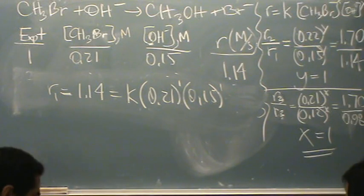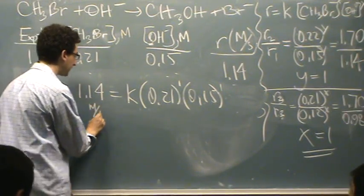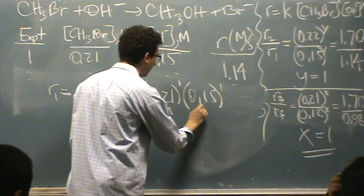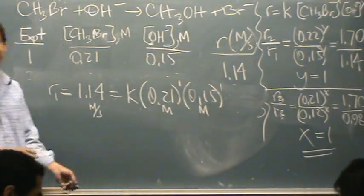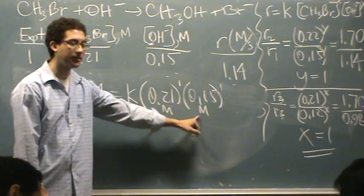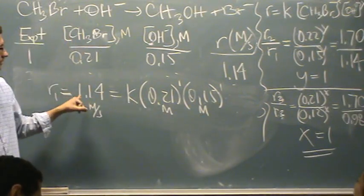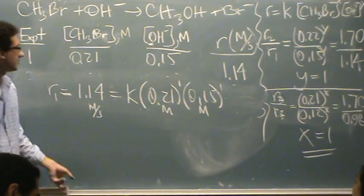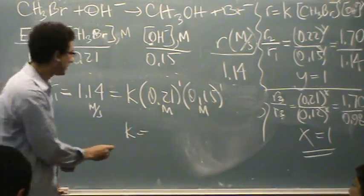So, you just solve for K. You want to work out your units. This would be meters per second. This would be molarity. So, basically, since this is second order, your answer would have 1 over molarity seconds. K is equal to 36.